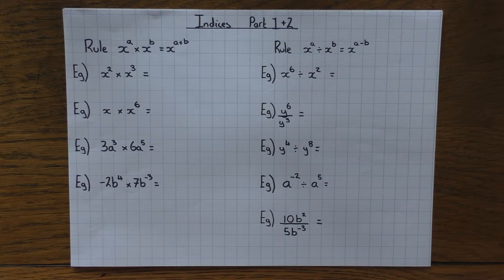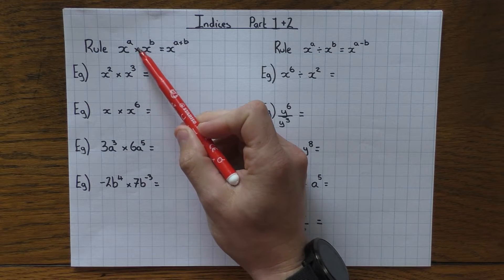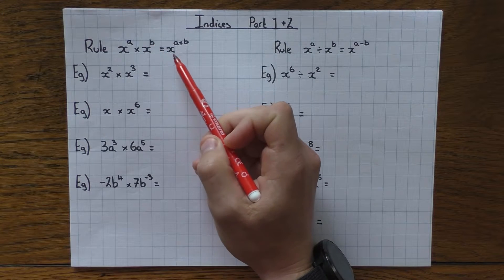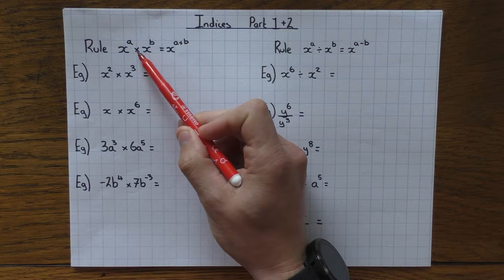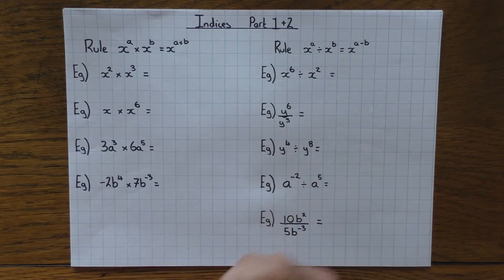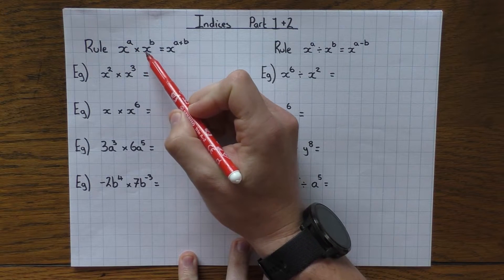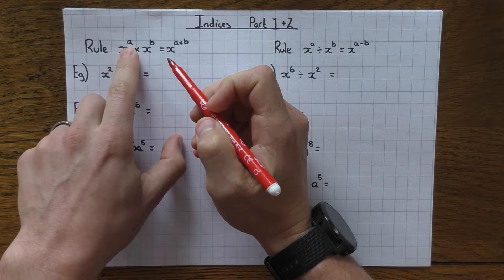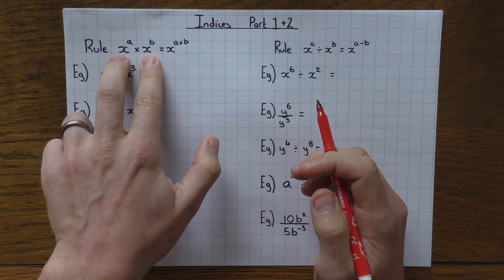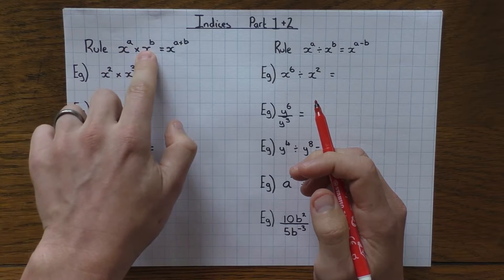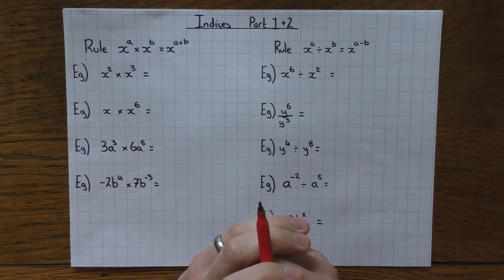The first rule: if you have x to the power of a, and you are multiplying it by x to the power of b, it can be simplified by just adding the powers. So if you're multiplying, you can just add the indices. You must note that the bases must be the same — it must be x times x, not x times y. The base must be the same to use this rule.